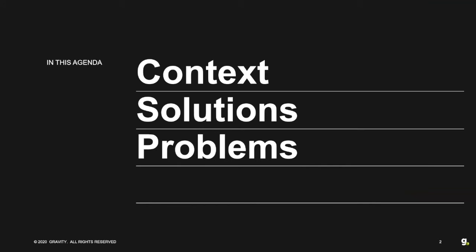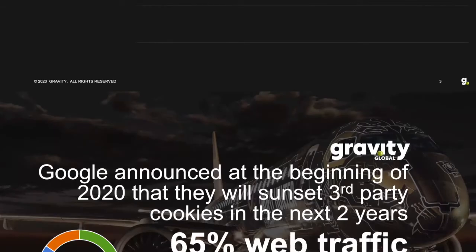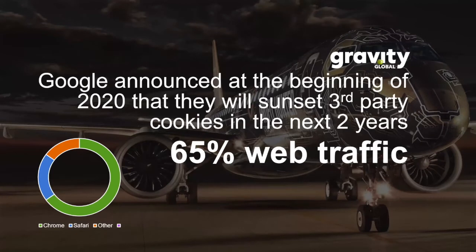In three parts: I'm going to spend a little bit of time running through the context — how we've got to this point — then we'll look at some of the solutions being tendered by Google and Chrome as alternatives to third-party cookies, and then as all good webinars I'm going to end with some problems. So first, some context: why are we here? Unless you've been living under a rock, you're aware that Google announced at the beginning of 2020 that they are going to sunset third-party cookies within the next two years in the Chrome browser.